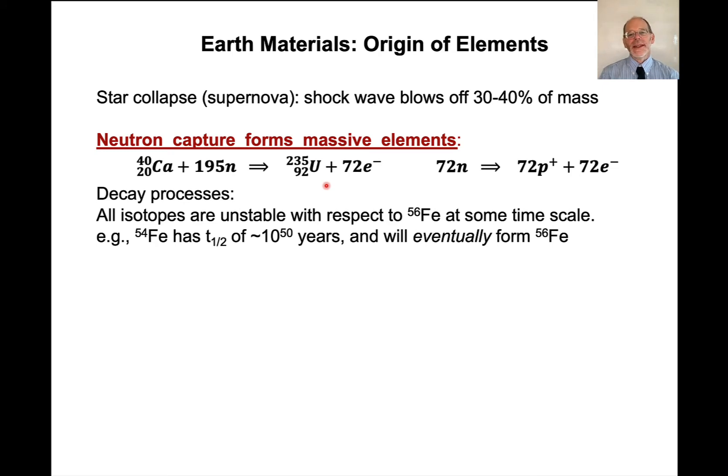Now, what does this mean? So remember that we have to add energy to create uranium-235. In fact, we have to add energy to create all of the isotopes, all of the elements above iron. What that means is that all of these isotopes are unstable with respect to iron 56 at some timescale.